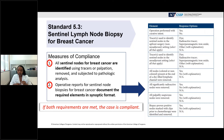Standard 5.3, sentinel lymph node biopsy for breast cancer, states that all sentinel nodes are identified using tracers or palpation, removed, and subjected to pathology analysis. The operative report must document this in a synoptic format with the critical elements and response options. If a tracer is used but the sentinel node can't be identified that way, an explanation can be offered. The key is to list all critical elements with a response for each one.